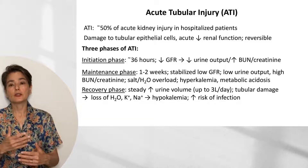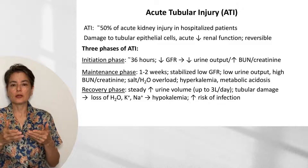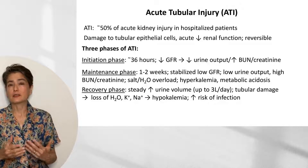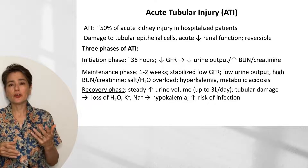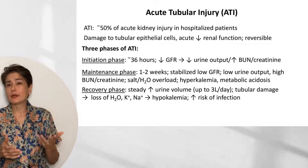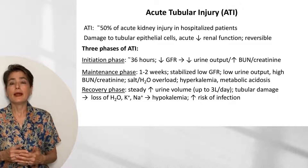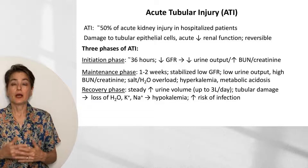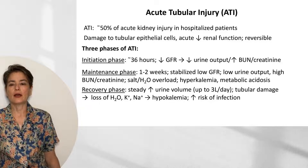As you progress towards healing, you'll get improvement of the GFR — it slowly increases, resulting in a steady increase in urine volume. However, because the tubular epithelium is still injured, urine volume won't return to the normal 1.2 liters per day; it can go up to almost three liters per day, causing loss of water and electrolytes like potassium and sodium. In contrast to the earlier hyperkalemia, patients are now at risk for hypokalemia, also a risk factor for arrhythmias. For unknown reasons, patients in this phase also have an increased risk of infection.